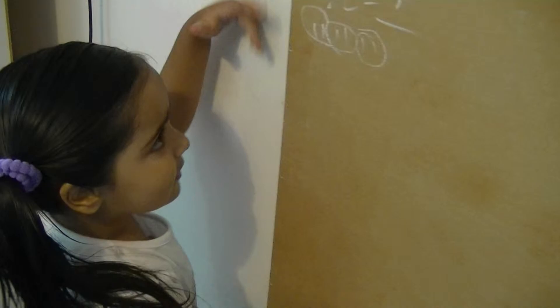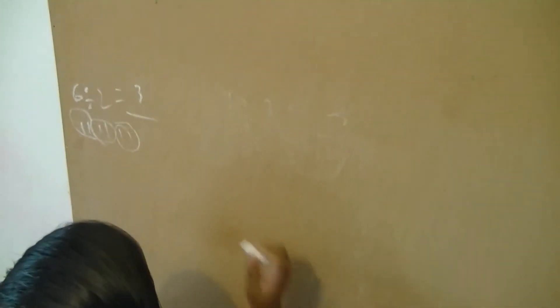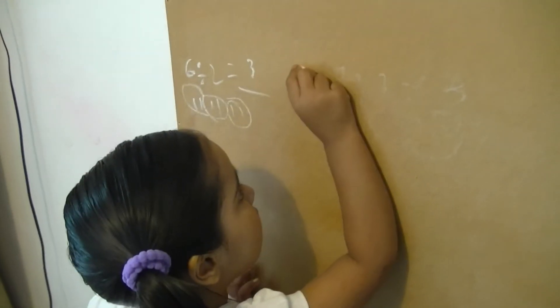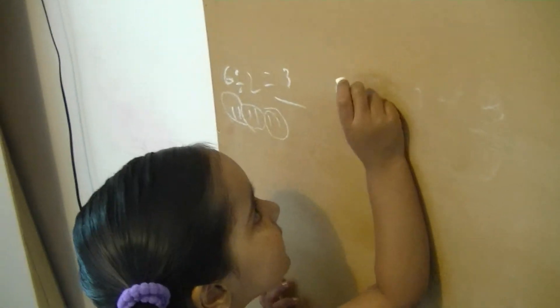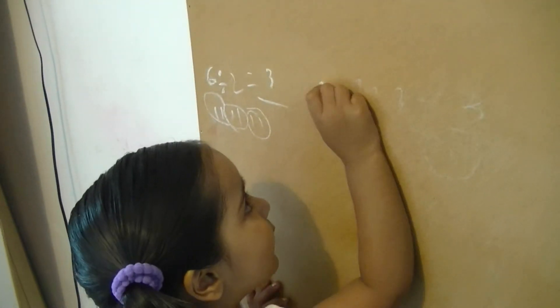That's interesting. Next, nine divide three makes three. How?